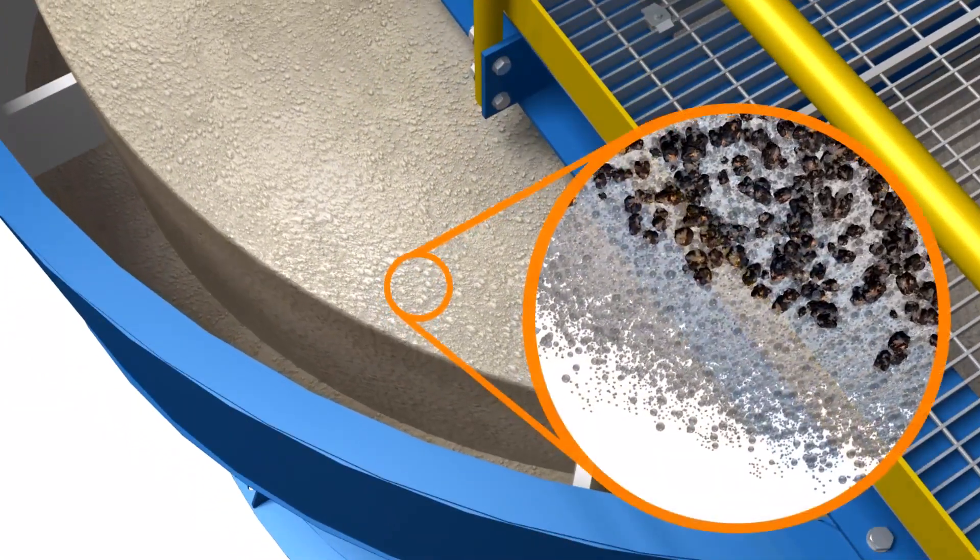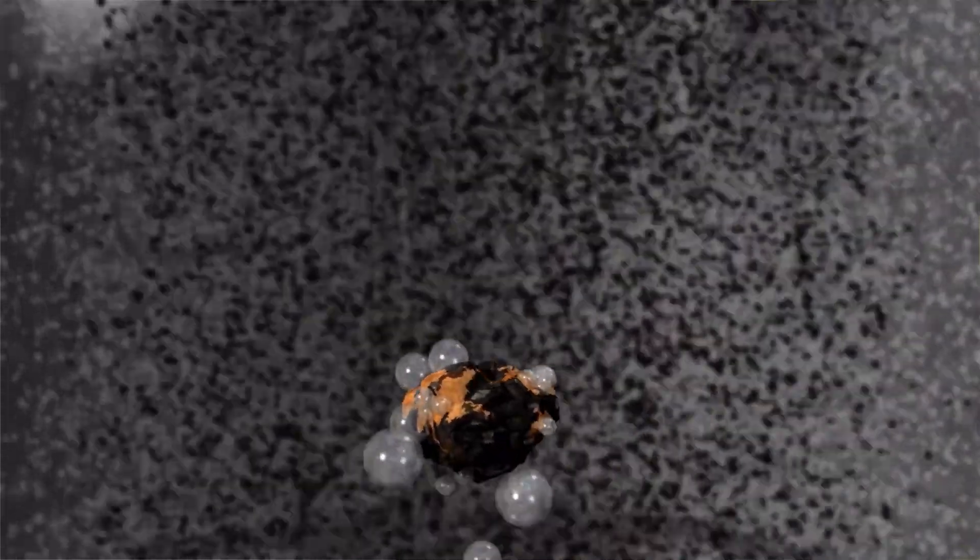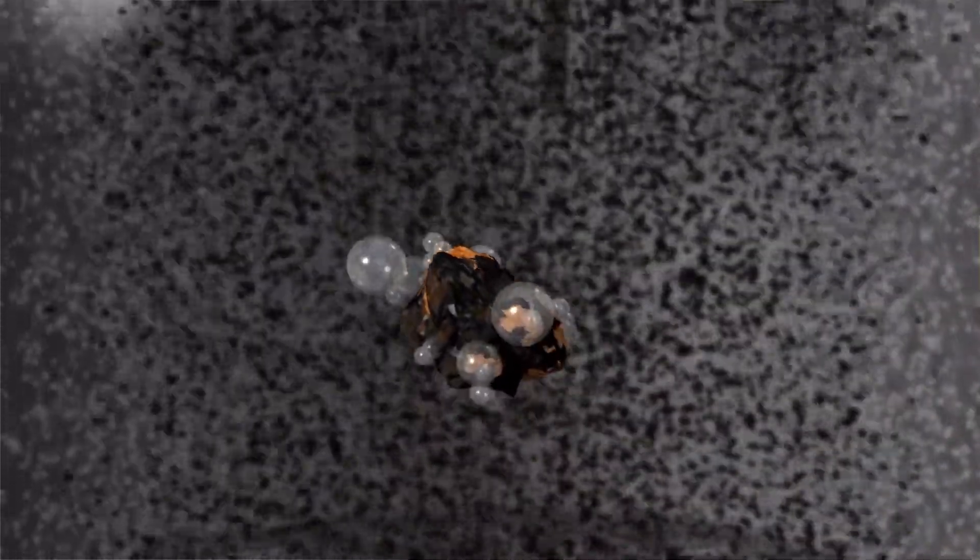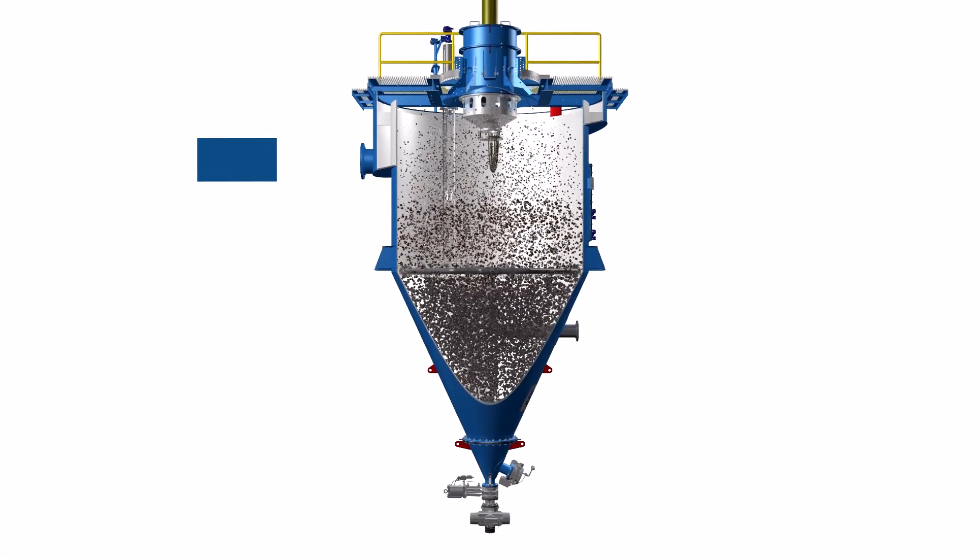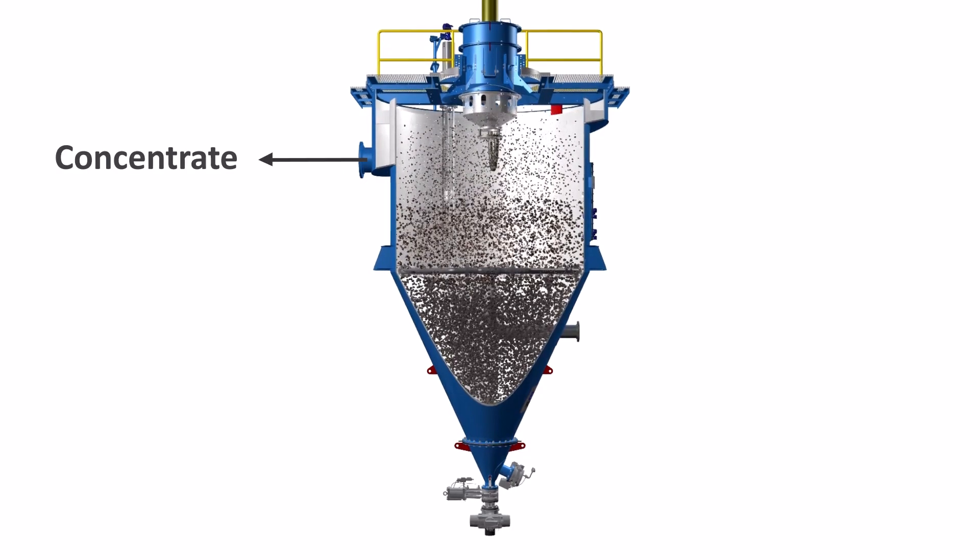Compared to conventional cells, the buoyancy required for the bubble particle agglomerates to rise to the top of the cell is substantially reduced in the Hydrofloat. This is due to the upward velocity of the fluidization water that carries the agglomerates to the overflow launder.